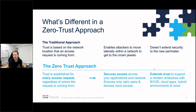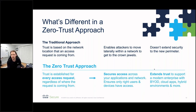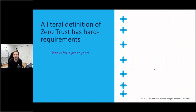The traditional approach relies on IP addresses and network location as the point of policy. Zero trust moves to establishing trust for every access request for every resource — ensuring only trusted users on trusted devices have the appropriate least-privilege access to applications, data, workloads, and so on.